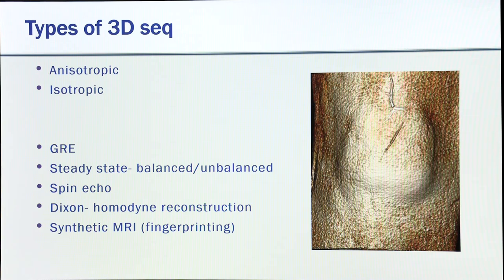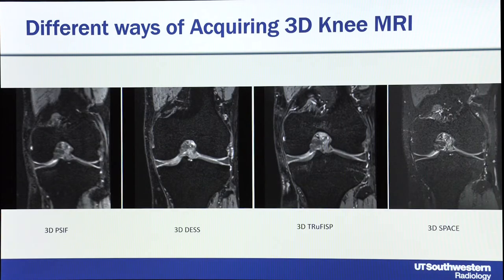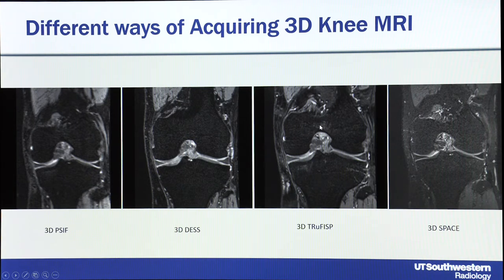The most well-accepted approach is the 3D spin echo type — in this case the Siemens variant 3D SPACE. There's also the true FISP, which is the balanced steady state; 3D DESS, a combination of gradient echo and spin echo; and 3D PSIF. On the true FISP there is some artifact in the bone marrow so you can't tell if it's real edema or normal. For cartilage differentiation — the deeper layer being darker, superficial layer wider — it's hard to appreciate on DESS, so we prefer the 3D SPACE or 3D TSE sequence.